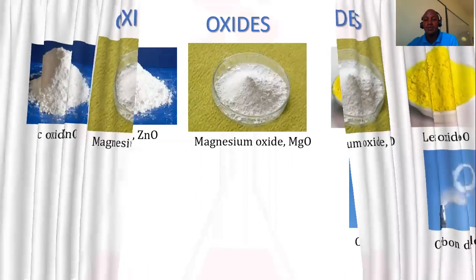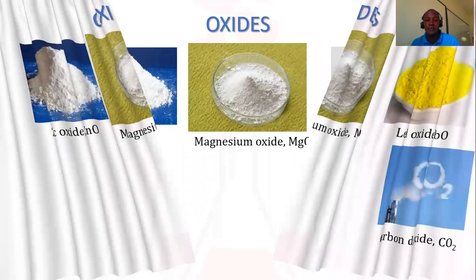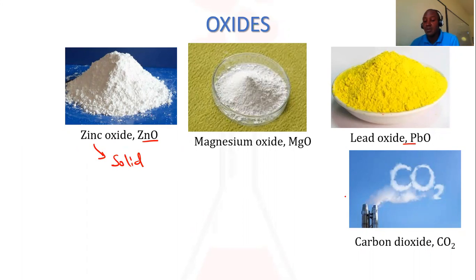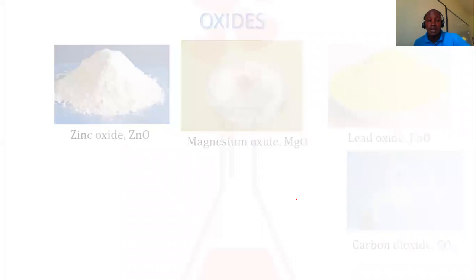Hello friends, in this video we are going to look at oxides — the different types of oxides that we have. When you look at this slide, you realize that most oxides can have different colors. For example, this is white, this side is yellow. You can also notice that oxides can be in solid state — for example, zinc oxide — while some other oxides can be in gaseous state, for example carbon dioxide. So let us dive deep and look at the different types of oxides.